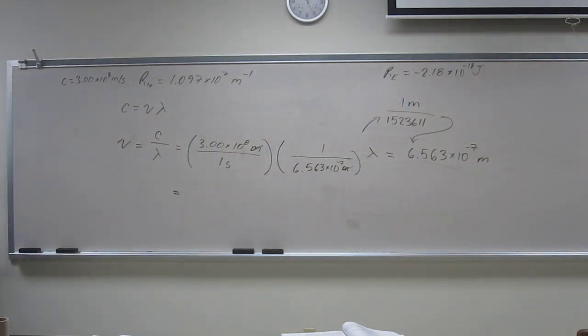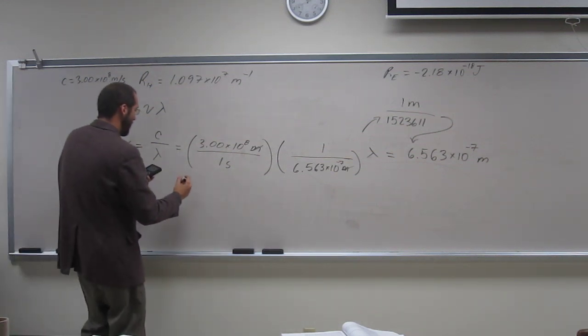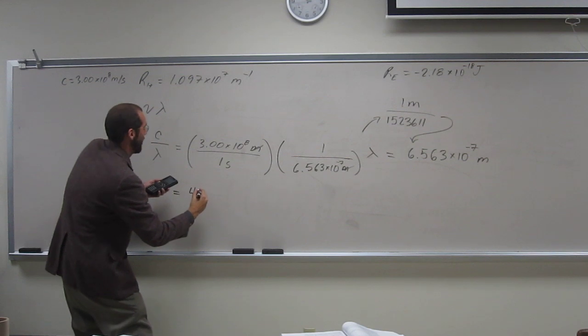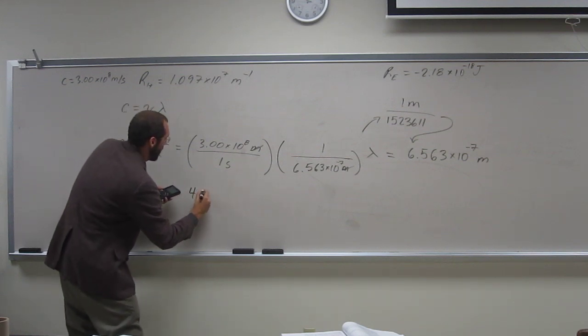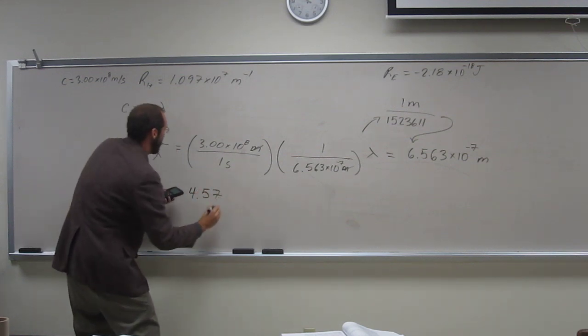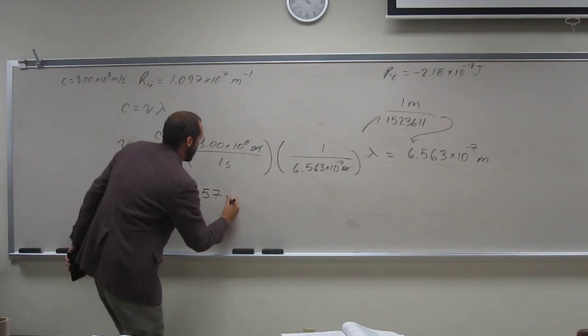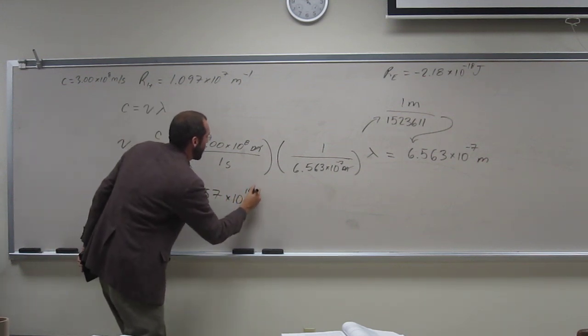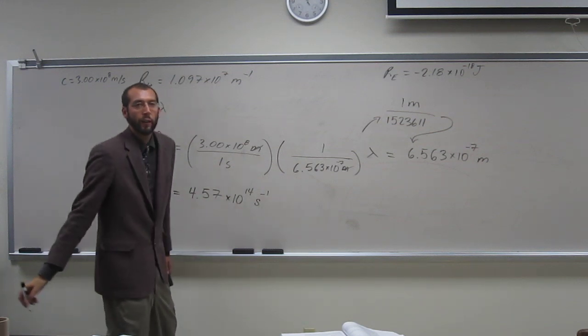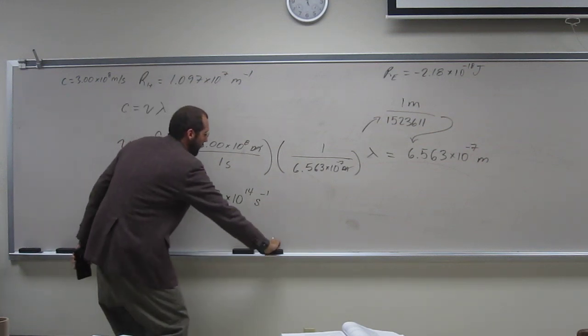So, again, like I always say, if you can cancel out your units, then you should be good. Okay? So, 4.57 times 10 to the 14th, and that's per second, right? And hertz is the same thing as per second.